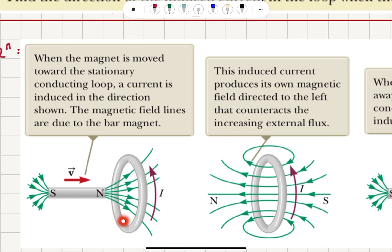This loop of wire feels the magnetic flux due to this bar magnet. The magnetic field lines point from the north pole towards the south pole on the bar magnet — outside and also inside. Therefore, we see that there is a magnetic flux pointing to the right through this loop.